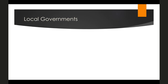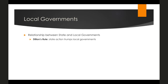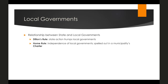Moving down to local governments, we see similar relationships between state and local governments as we saw between state and federal. The Supreme Court has upheld Dillon's Rule, which is that state action trumps local government — the state holds sovereignty and ultimate authority over local government action. However, there's also a tradition of home rule in which local governments at the county or municipal level exercise a certain amount of independence from the state. The particular roles and structure of a local government are spelled out in its charter, which is analogous to a constitution.